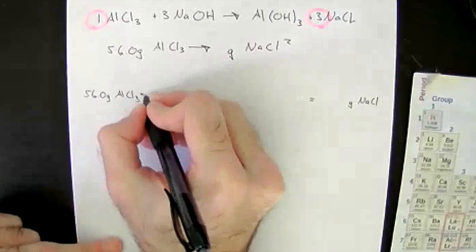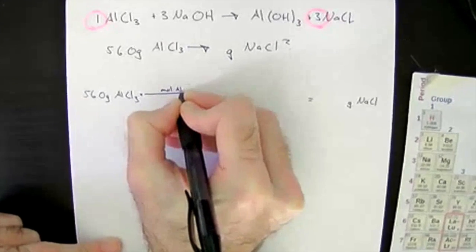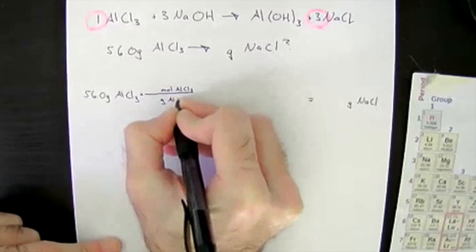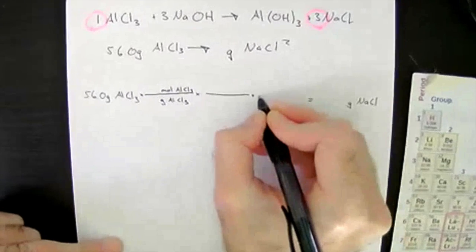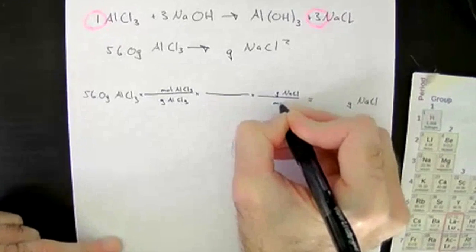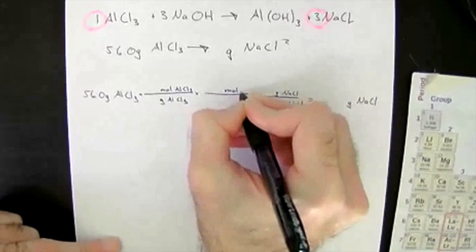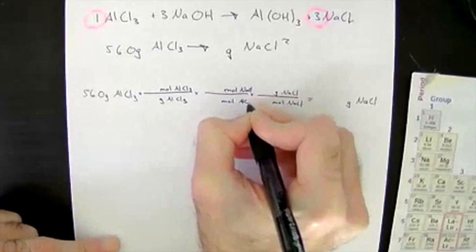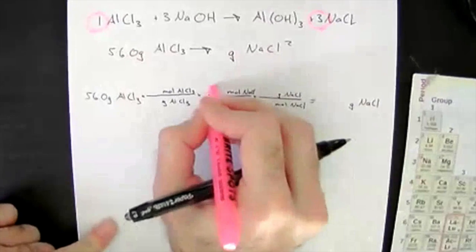So mole aluminum chloride, I'm going to go to gram aluminum chloride, and at the very end, I want to go to gram sodium chloride, so it goes to the top, and I'm probably coming from mole sodium chloride. And in between, I had mole sodium chloride and mole aluminum chloride. So I can write the numbers from here, so I have the one here and I have the three here.